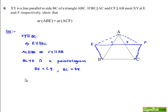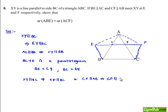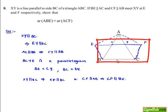In quadrilateral BCFX, XY is parallel to BC, which implies XF is also parallel to BC. And since CF is parallel to AB, we can say CF is also parallel to BX. Therefore, in quadrilateral BCFX, we have opposite pairs of lines as parallel. Therefore, BCFX is a parallelogram.